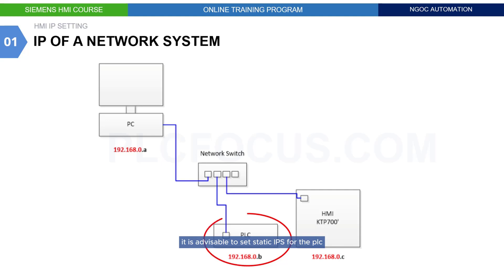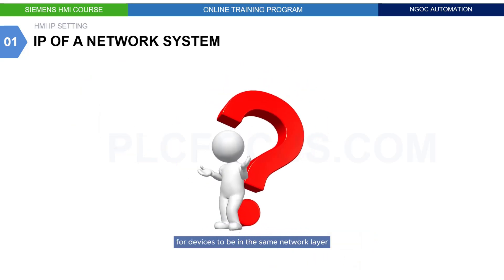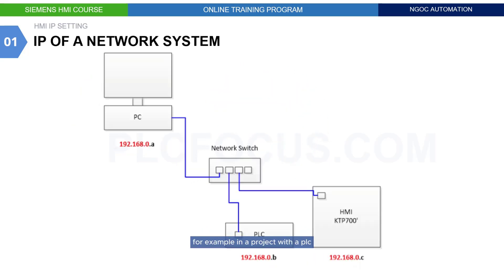In a specific project, it is advisable to set static IPs for the PLC, HMI, and the computer. So, what does it mean for devices to be in the same network layer?